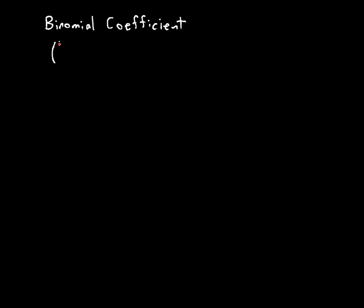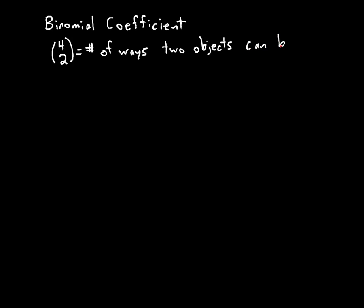I'm going to start with an example. This example is going to look like a fraction in parentheses, but it doesn't have the line that a fraction has. This is called 4 Choose 2, and that's because this means the number of ways two objects can be chosen from four objects.